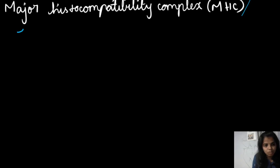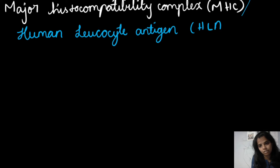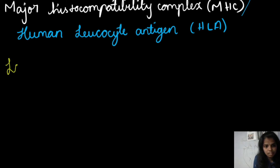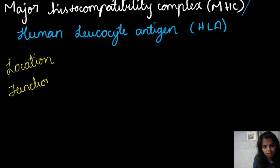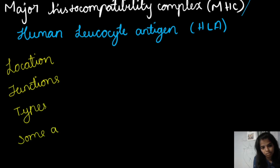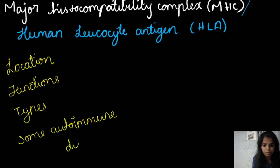Hello toppers, today we are going to discuss an interesting chapter from immunology: Major Histocompatibility Complex, shortly called MHC, also called Human Leukocyte Antigen, shortly called HLA. You might have heard about this while studying autoimmune disease conditions. Today we will discuss the location of MHC, its functions, types, and some autoimmune diseases associated with MHC — which are more important from an MCQ point of view.